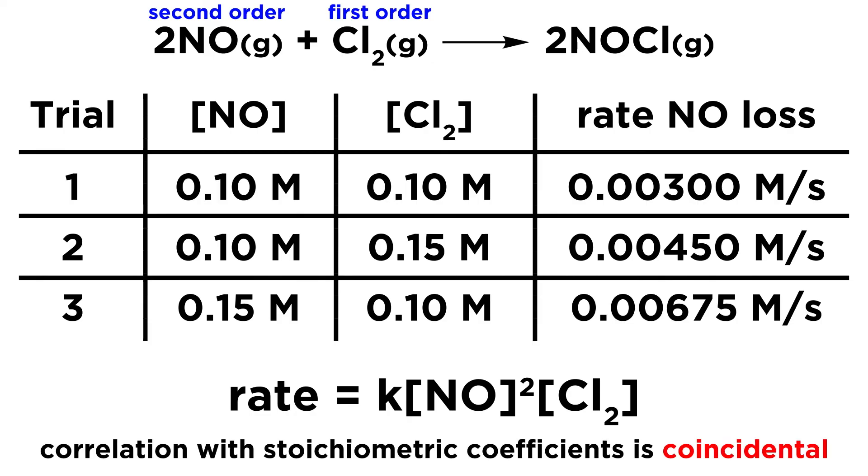Now, it is very important to note that any correlation with stoichiometric coefficients is coincidental. It is true that NO is raised to the second power, and it has a coefficient of 2, and Cl2 is not raised to any power, and it has a coefficient of 1. So those do correspond to the stoichiometric coefficients in the balanced equation, but that is coincidental. It is not the case that those coefficients become the exponents in the rate law, and you will see many examples where they do not correlate. So we must remember that is purely coincidental.